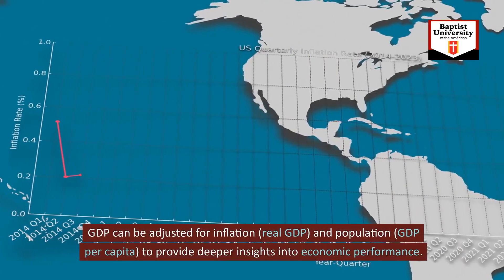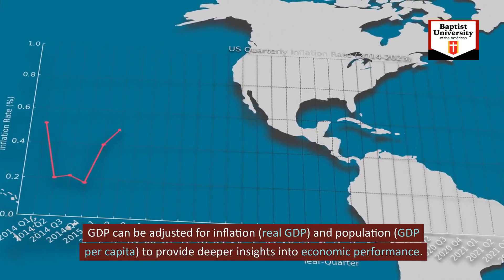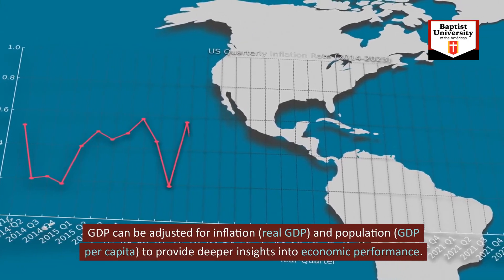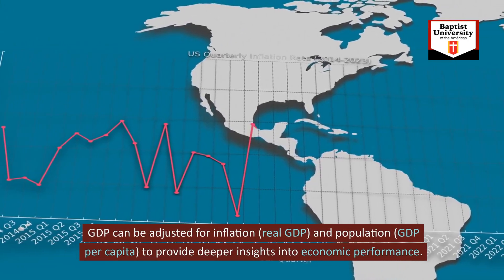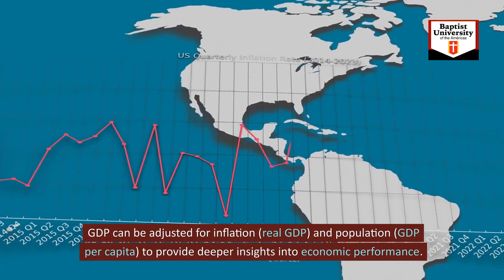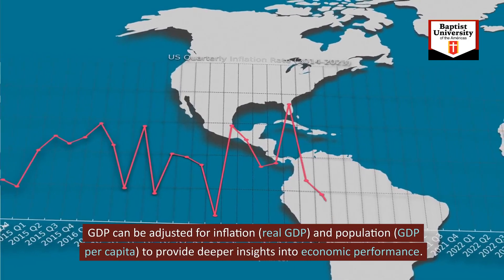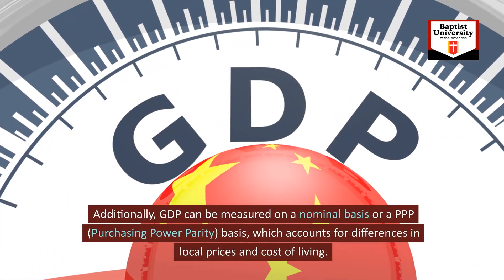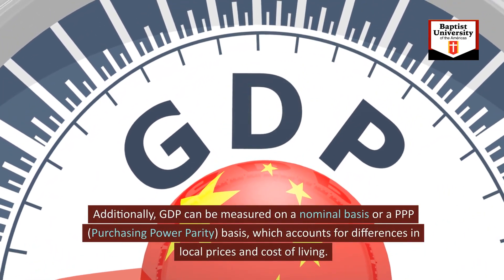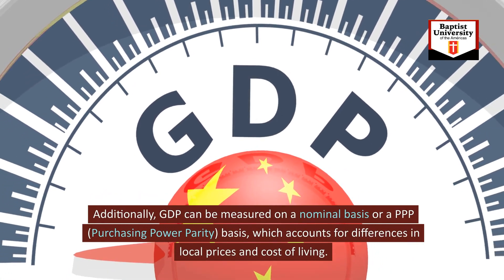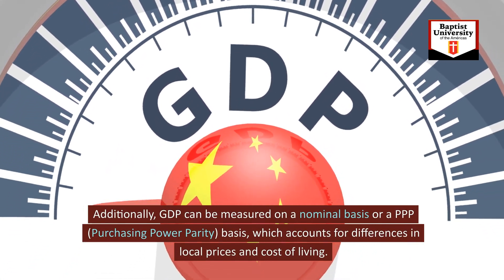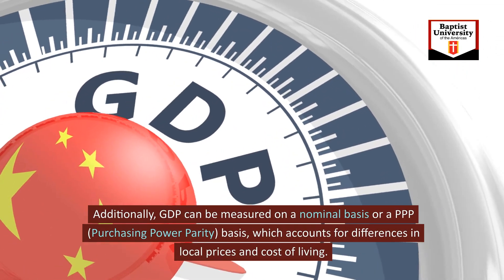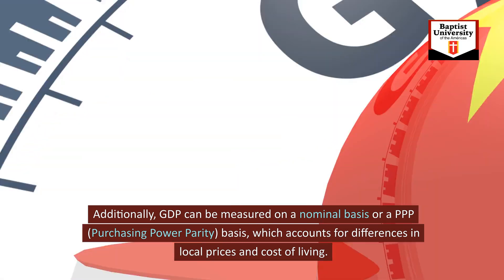GDP can be adjusted for inflation (real GDP) and population (GDP per capita) to provide deeper insights into economic performance. Additionally, GDP can be measured on a nominal basis or a PPP (purchasing power parity) basis, which accounts for differences in local prices and cost of living.